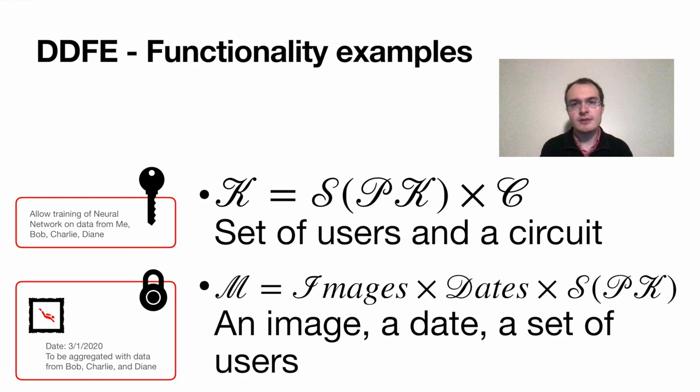So in our case, we'll remember that our participants would embed into their functional key both the set of participants as they perceived it, and the training algorithm. That set of participants would really be a set of public keys. And maybe that algorithm was represented as a circuit. Hence the set of keys here, the Cartesian product of the set of sets of public keys and a set of circuits. The message contained an image, a date, and again, a set of participants. So the set of messages is pretty straightforward. Now clearly, we want to hide the image, but perhaps those other attributes don't need to be hidden. That's all okay. It can be expressed with the functionality, as it would be with traditional functional encryption.